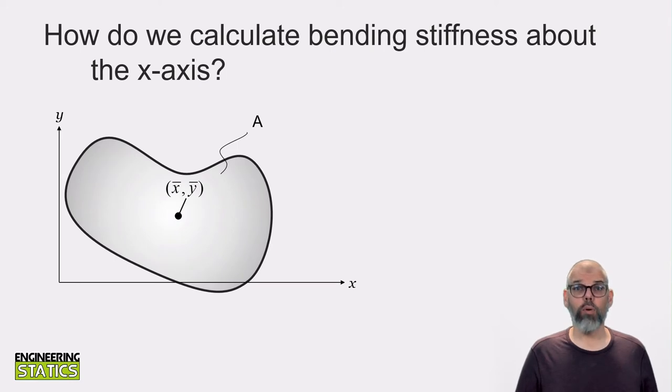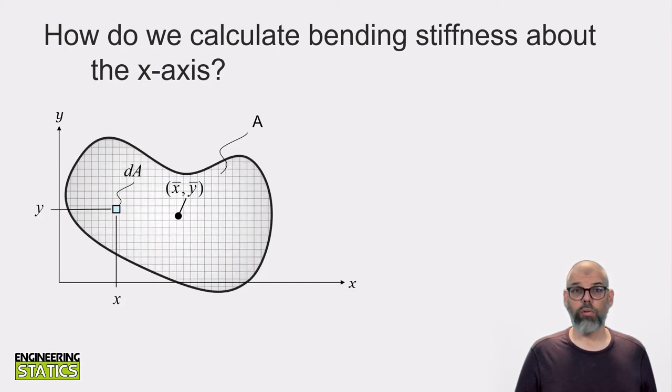Conversely, the area moments of inertia, which is often referred to as the second moment of area, quantifies the geometric bending stiffness of a given shape about an axis. It is defined as the integral of the perpendicular distance from an axis squared multiplied by dA. So for calculating the area moment of inertia about the x-axis, this would be the integral of y squared dA.